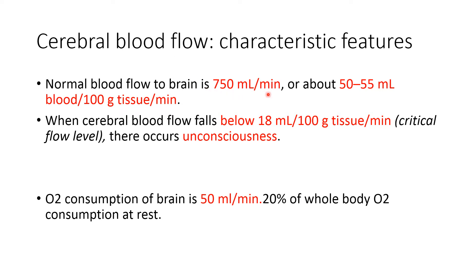The normal blood flow to the brain is 750 ml per minute, or about 50 to 55 ml per 100 grams of tissue per minute. When cerebral blood flow falls below 18 ml per 100 grams of tissue per minute, it results in unconsciousness — this is known as the critical flow level. Oxygen consumption of the brain is about 50 ml per minute, which represents 20% of the whole body's oxygen consumption of 250 ml per minute.